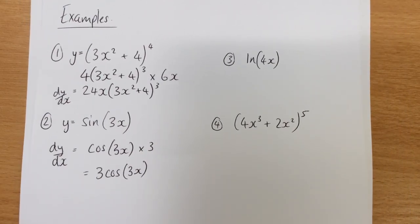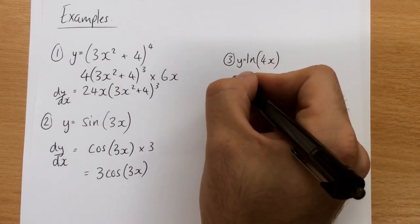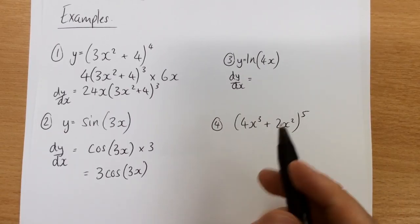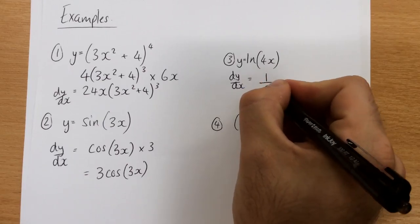Third one, with log, same process, so y equals that, if I want to differentiate it, I'm going to differentiate it as if it was just log of x, and then I'll worry about the differential afterwards. What does log go to? 1 over x.